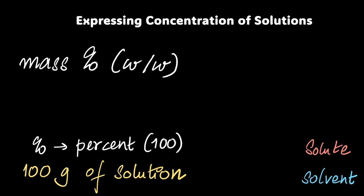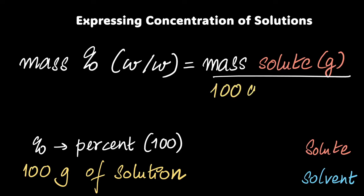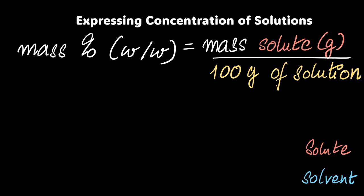So mass percentage w by w is defined as exactly what we just said: mass of solute in grams divided by 100 grams of solution. Now you may be like, I don't always have 100 grams of solution. What if I have just say 5 grams of solute in 17 grams of solution? I should have a formula that tells me the mass percentage even with that calculation. Sure, why not?